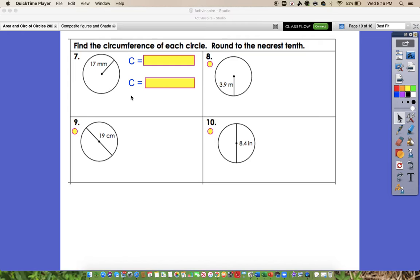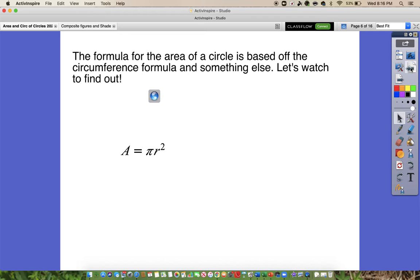So for number seven on your notes, we're finding the circumference, and we have been given the radius. We know it's the radius because it just goes from the center to the outside of the circle.